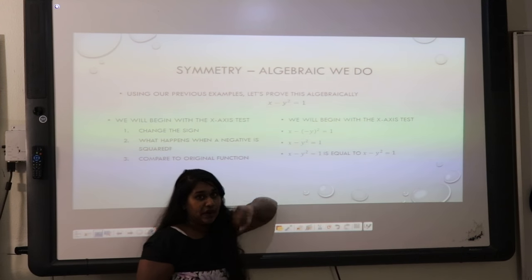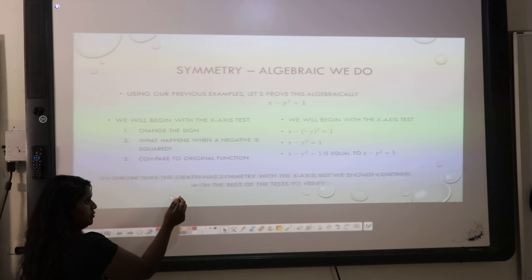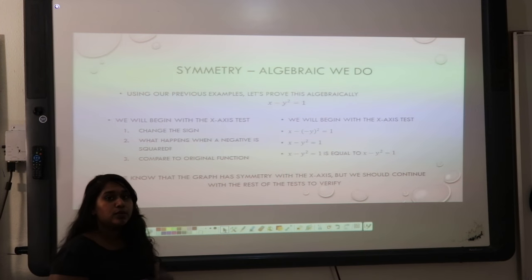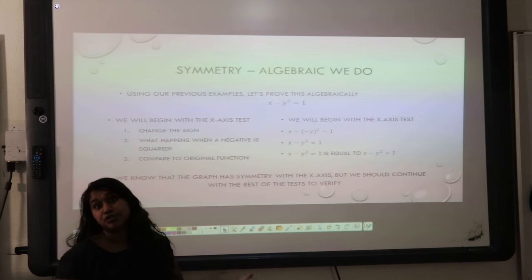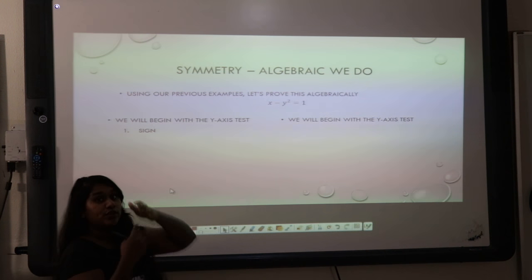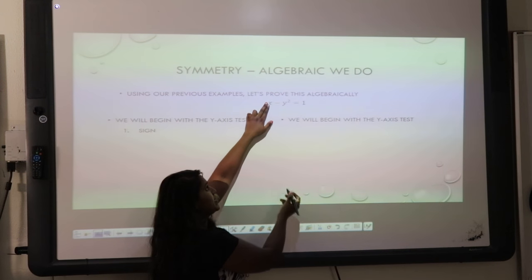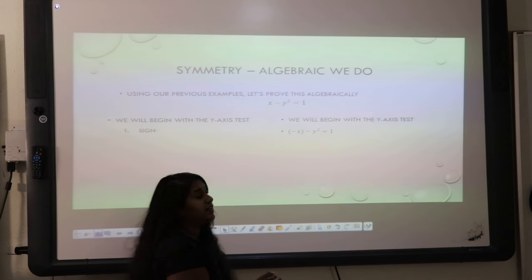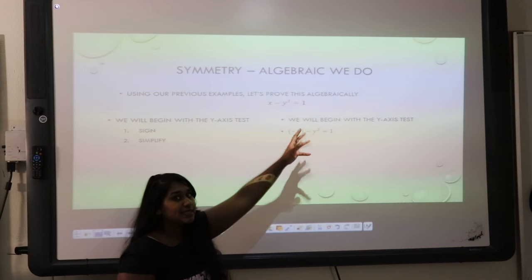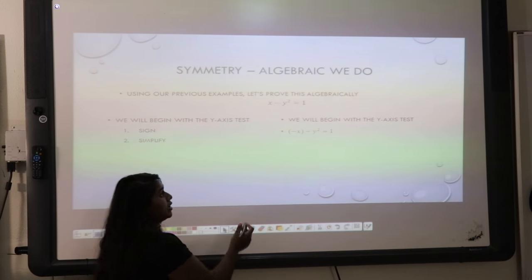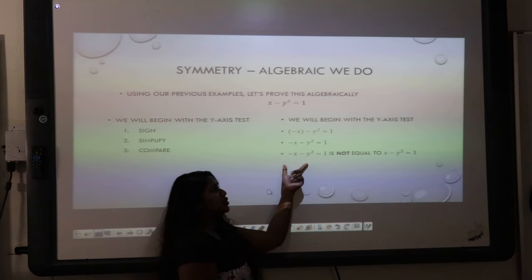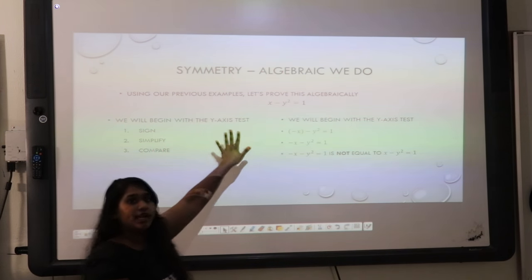We already knew this because this was our first example that we did graphically. Even though we know that the graph has symmetry to the x-axis, we should still continue to test the rest — so that you know how each one works, and also so that you can verify there's not double symmetry somewhere. Let's go ahead and do the y-axis test. With the y-axis, we're changing the x. So I bring down that x, place it in parentheses, and make it negative. I bring down the rest of the function exactly how it is. Then I simplify — what can I do to remove these parentheses? Well, I just drop them — it becomes negative x minus y squared equals 1. Let's compare it to the original function. It does not match — that means it does not have symmetry with the y-axis.